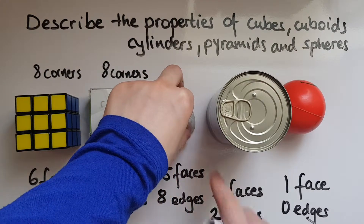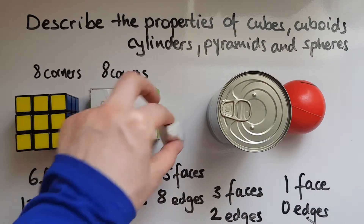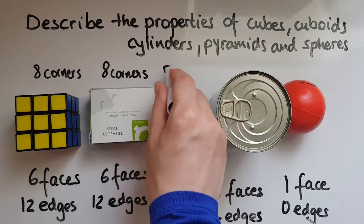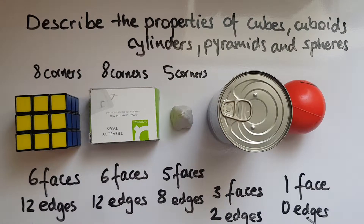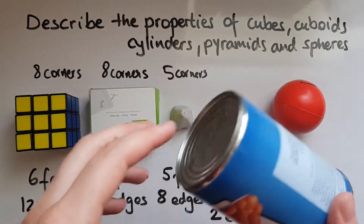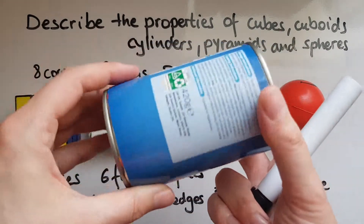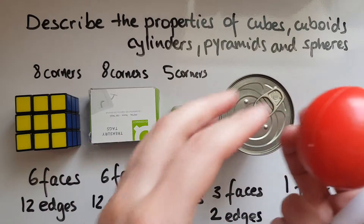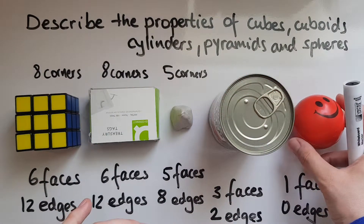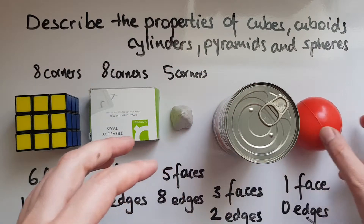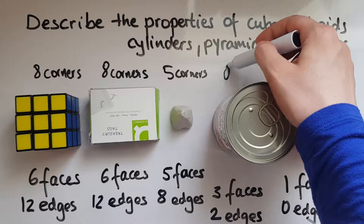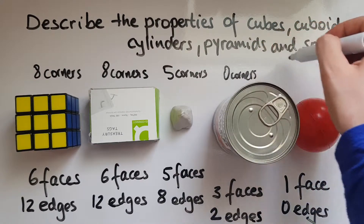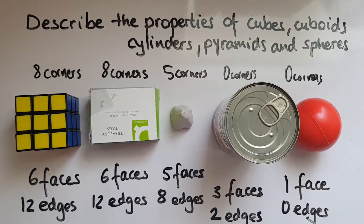In a square-based pyramid we've got one, two, three, four, five — five corners. In a triangular-based pyramid it'd be four. Do we have any corners in a cylinder? No, we don't have any corners at all. And there are none in the sphere as well — like the corners of a room. So zero corners.